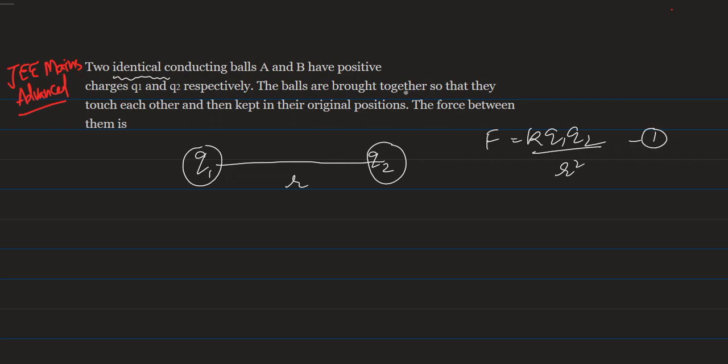Now in the question, the balls are brought together so that they touch each other and then kept in their original positions again. The question asks what is the new force between them with respect to the initial force. Initially the force is K Q1 Q2 by R square. Now we bring them together in contact.